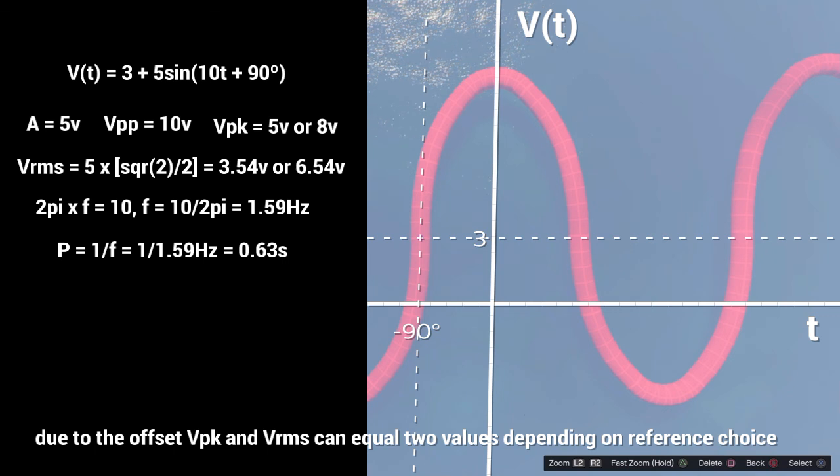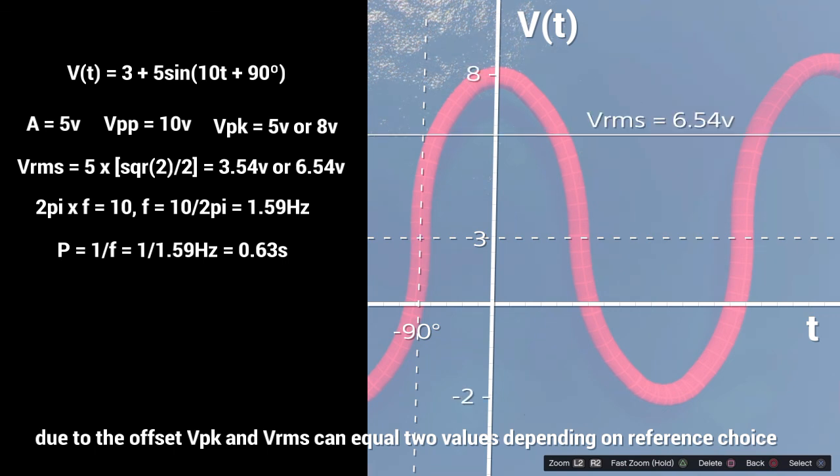We work through all our values, and one of the tricks at the end is finding the frequency. That frequency is hidden in the 10, so we can rearrange the angular velocity formula and get the frequency as seen there.